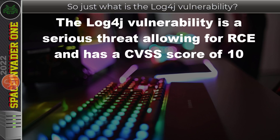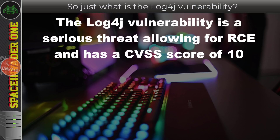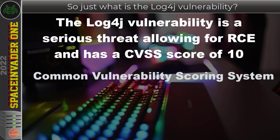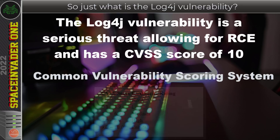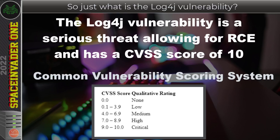If you don't know what that means, well it doesn't really mean much at all. Obviously we know what 'vulnerability' and 'serious threat' mean, but just what is log4j, what's RCE, and what the hell is a CVSS score? A CVSS score stands for Common Vulnerability Scoring System and it's scored from zero up to a maximum of 10 — it basically says how bad a vulnerability is. The log4j vulnerability scores as high as it can get: a 10. It's critical.